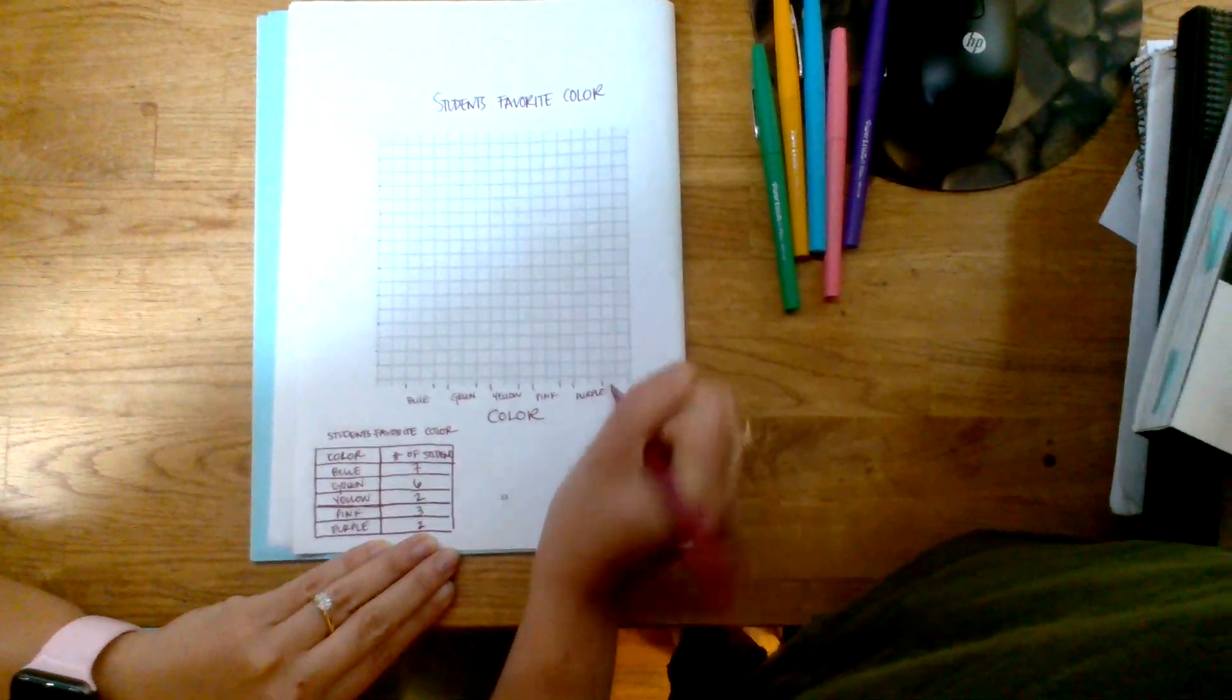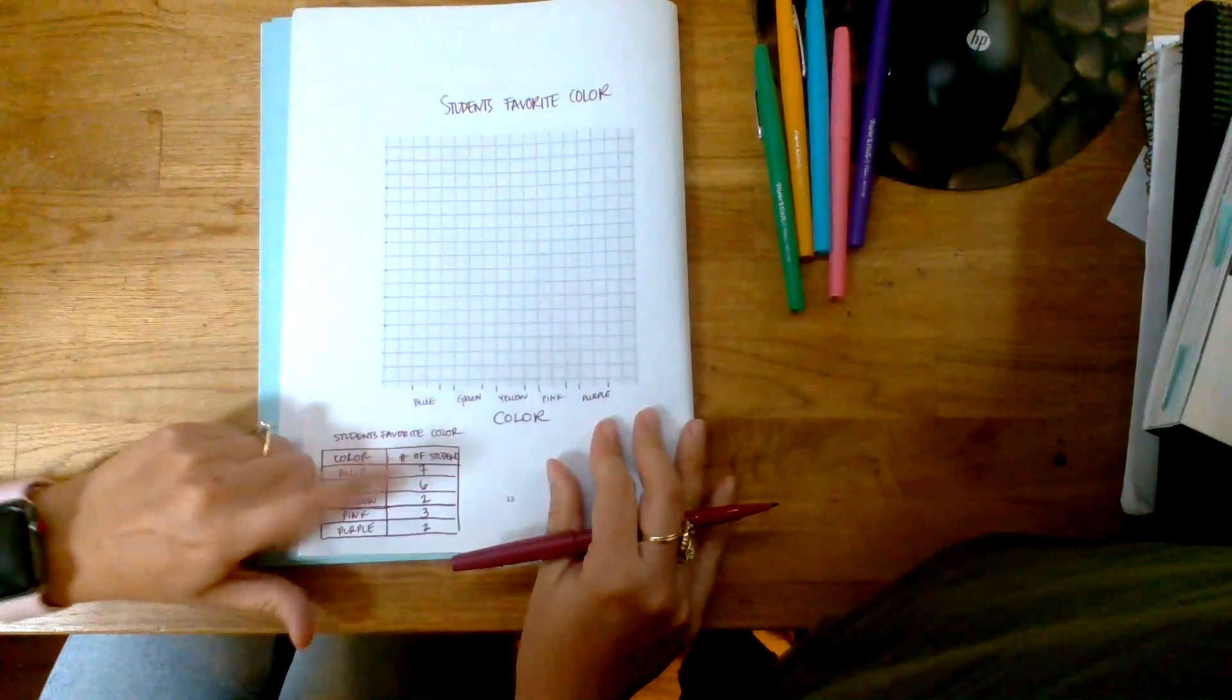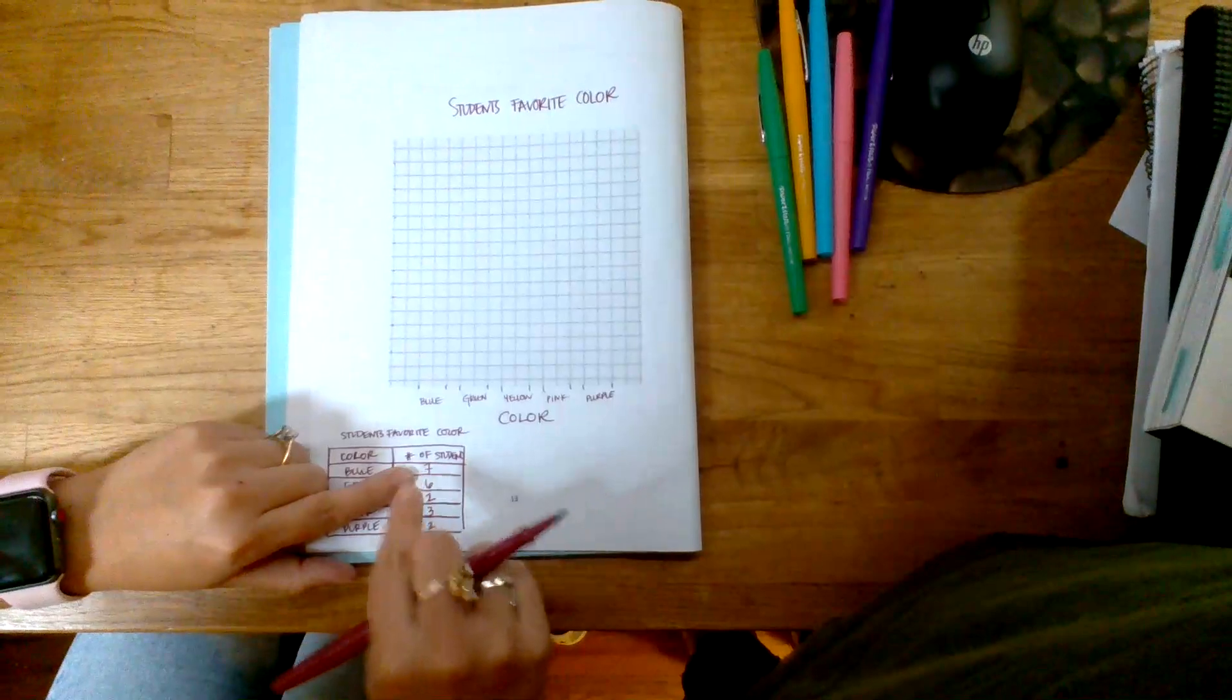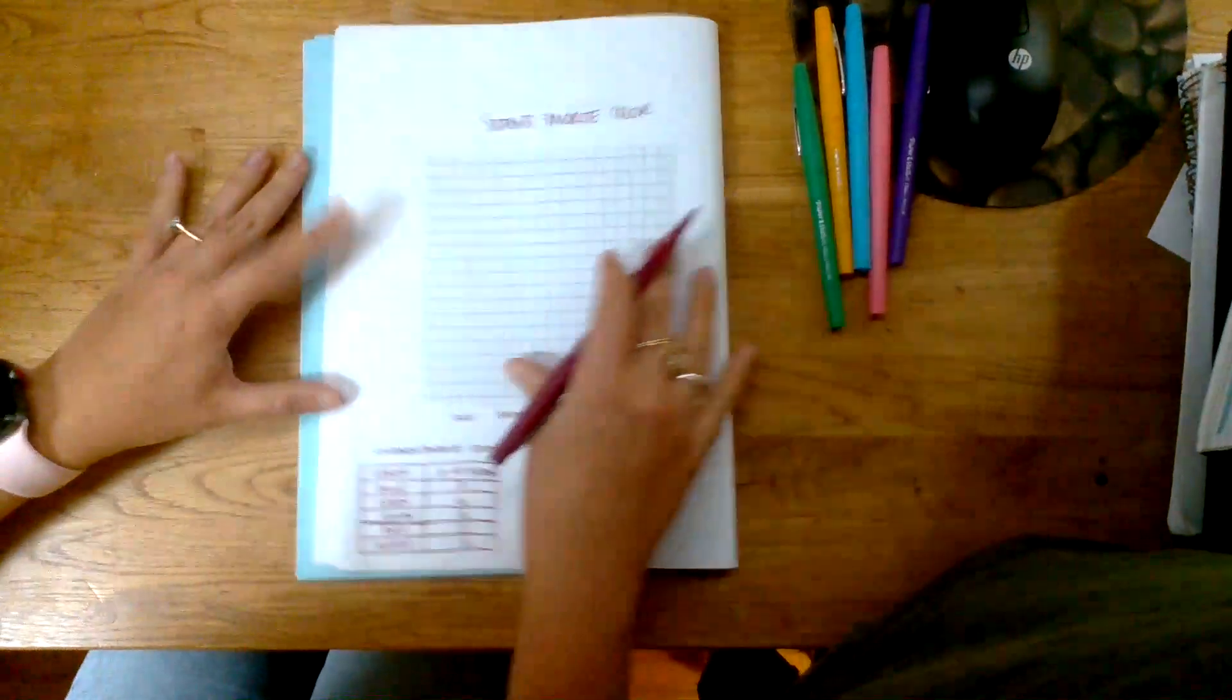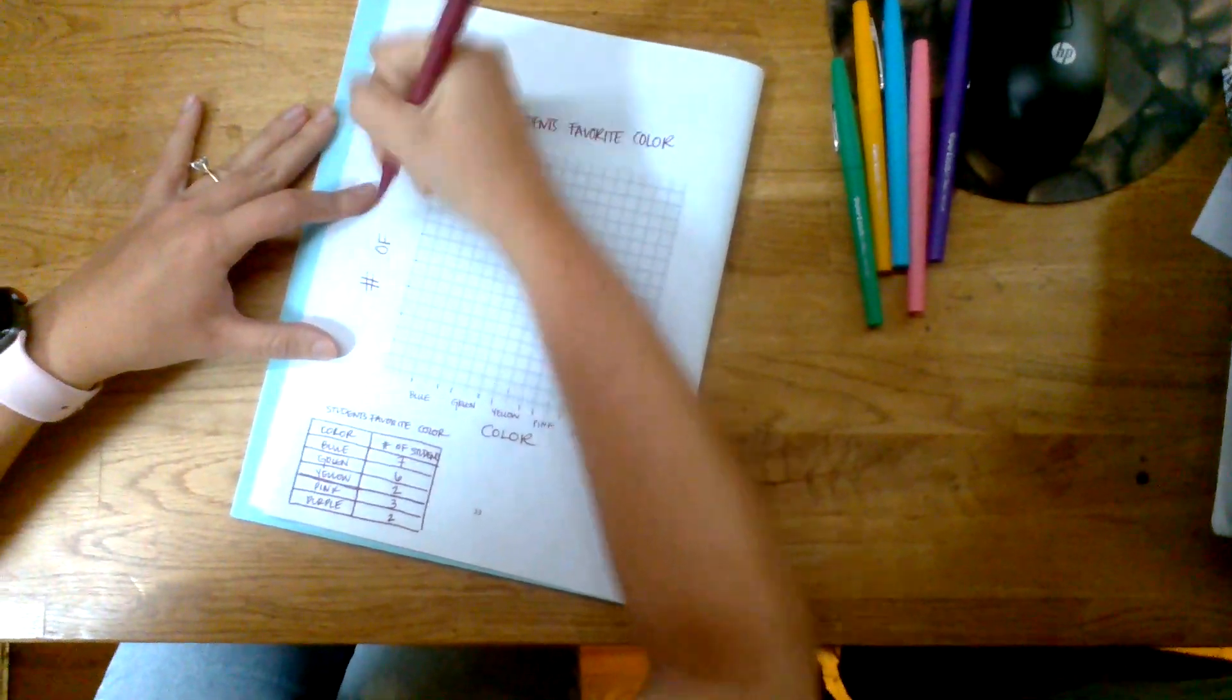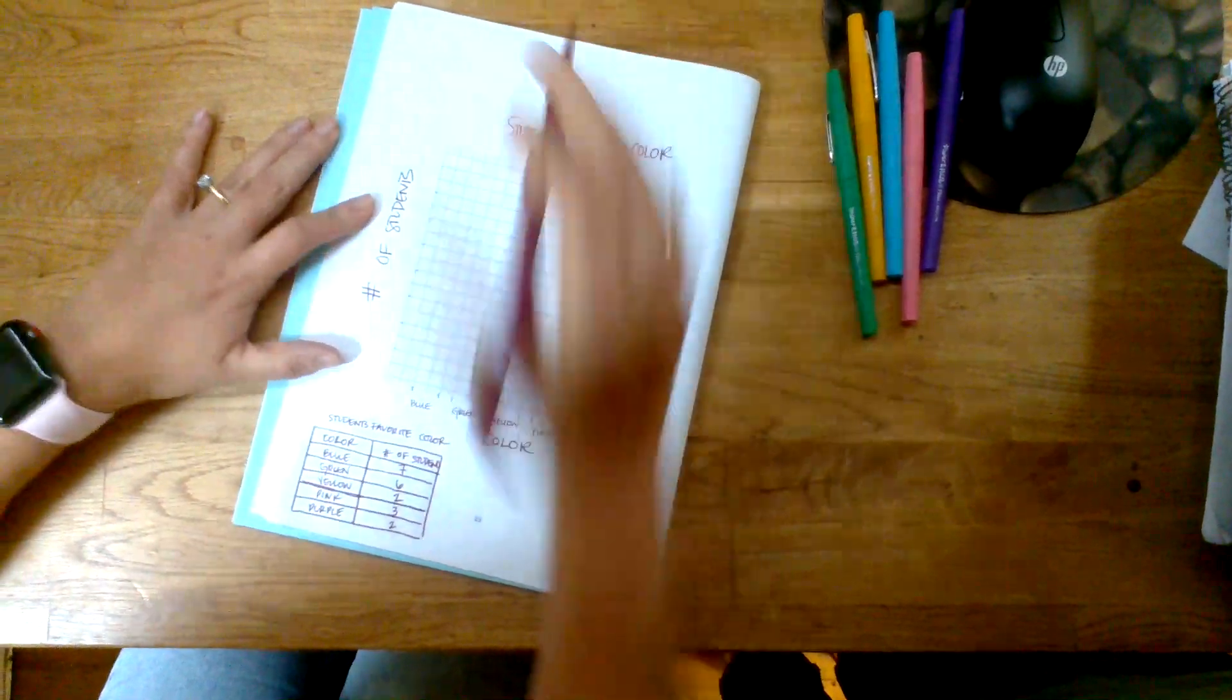Now you want to look at your numbers that you have, which is going to go on the y-axis, because this is our dependent variable. This is the variable that depends on the color, right? So this is what we measure: the number of students. I'm going to go ahead and put over here 'number of students.'